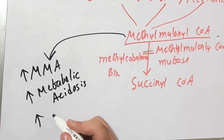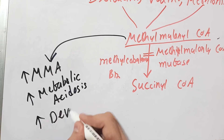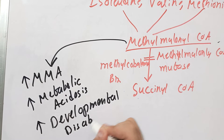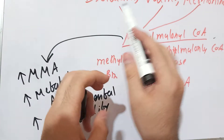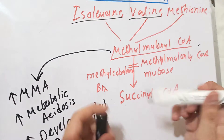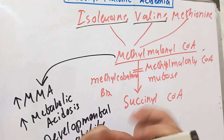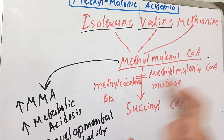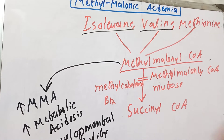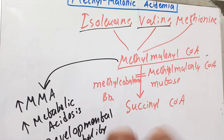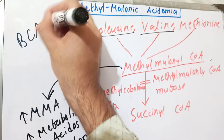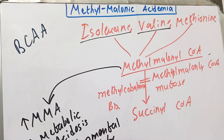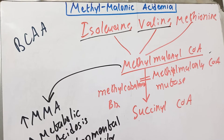Another manifestation of methylmalonic acidemia is developmental disability. The amino acids isoleucine and valine are branched-chain amino acids, and their metabolism produces methylmalonyl coenzyme A. When there is deficiency of either B12 or the methylmalonyl coenzyme A mutase enzyme, these branched-chain amino acids start accumulating in the tissues, specifically the central nervous system tissues, leading to mental retardation and developmental disability.